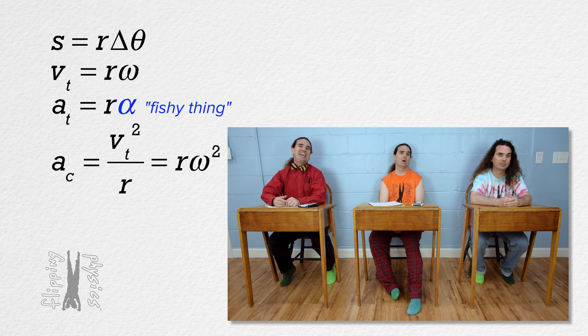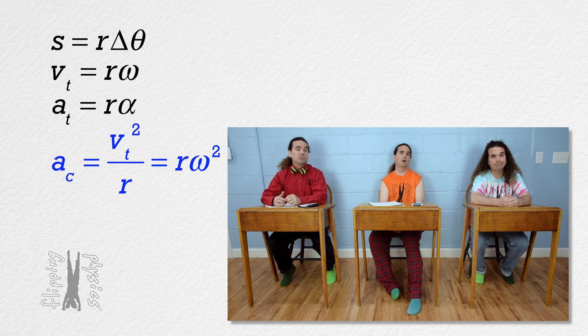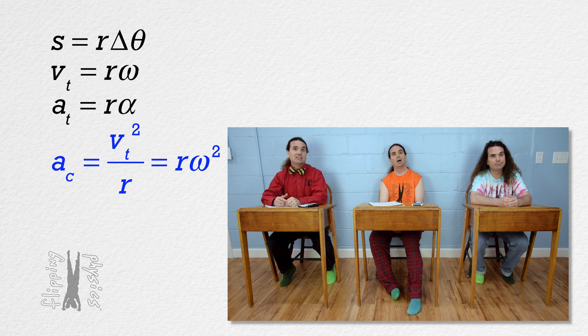Fishy thing! Right. Fishy thing. Centripetal acceleration equals tangential velocity squared divided by radius, and it also equals radius times angular velocity squared. Thanks.